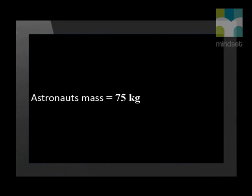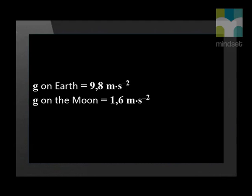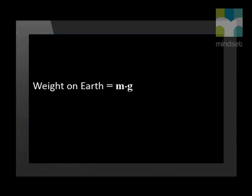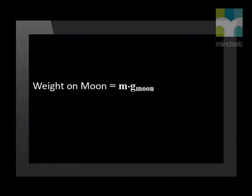The gravitational acceleration on the moon is six times smaller than on earth. To calculate the weight of the astronaut on earth, we multiply the mass of the astronaut by the gravitational acceleration on earth and we get 735 newtons. The gravitational acceleration on the moon is one sixth compared to that on earth, so we use 1.6 meters per second squared.